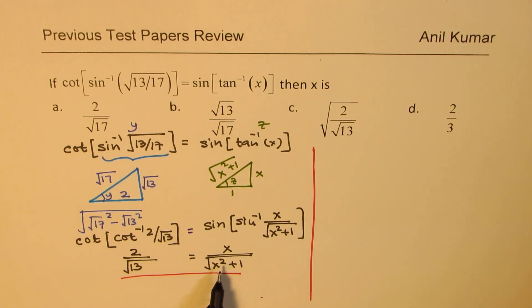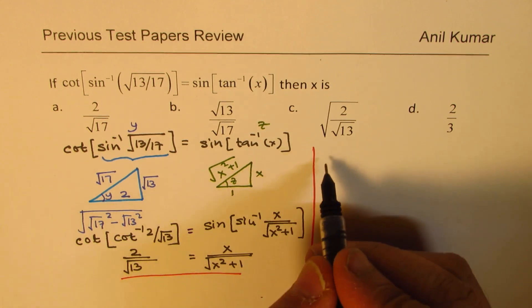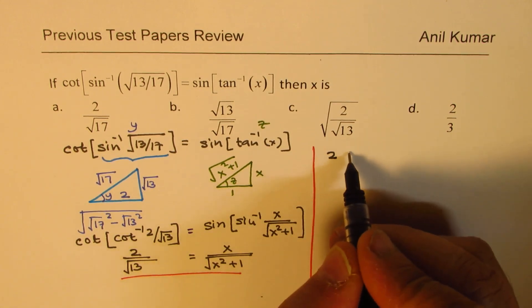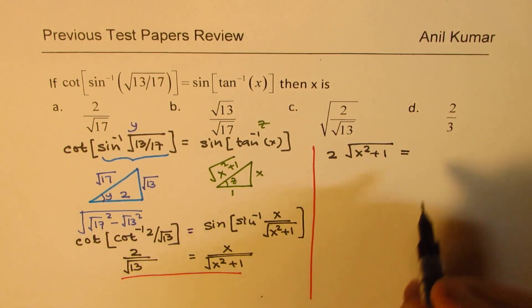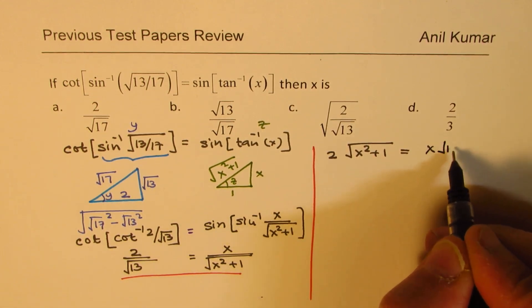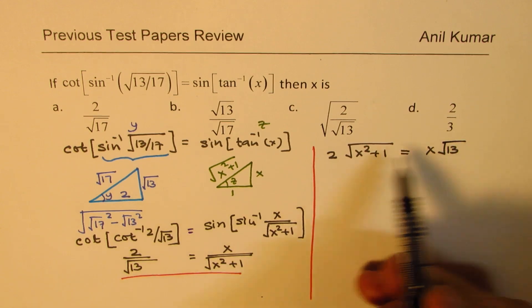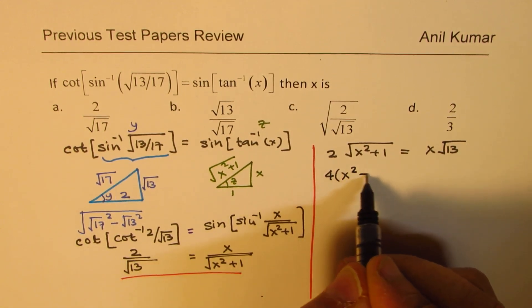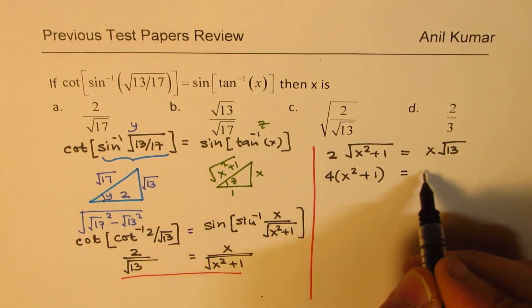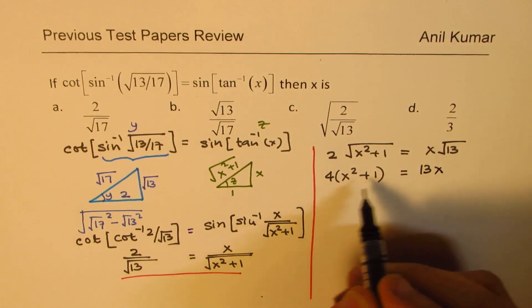In first step, let's cross multiply. What we get here is 2 times square root of x square plus 1 equals to x times square root of 13. To get rid of square root, let's square it. So we get 4 times x square plus 1 equals to 13x. Open the bracket.